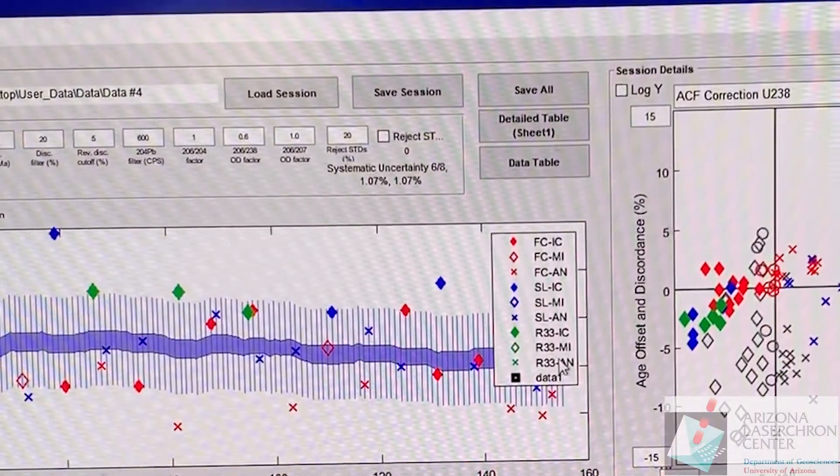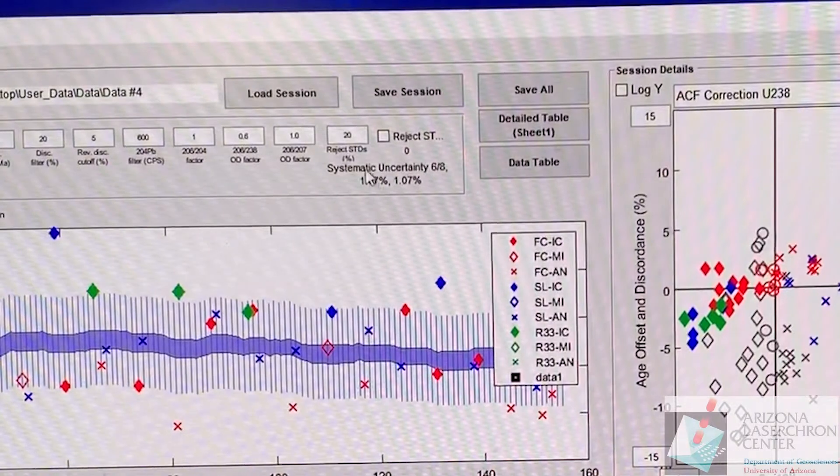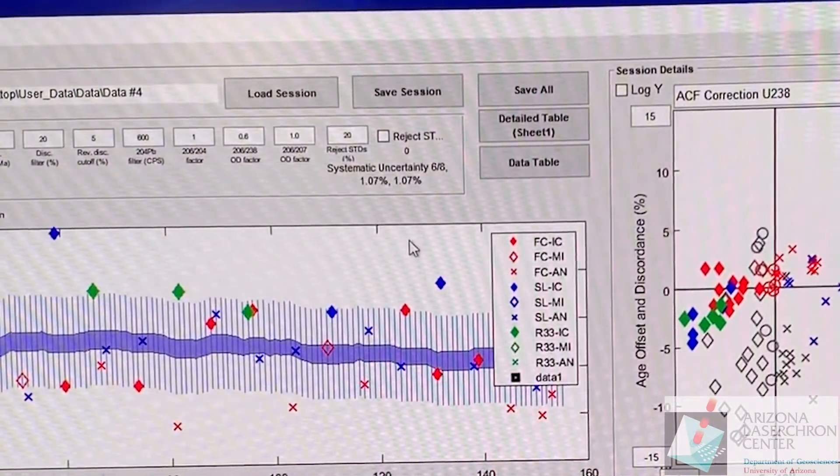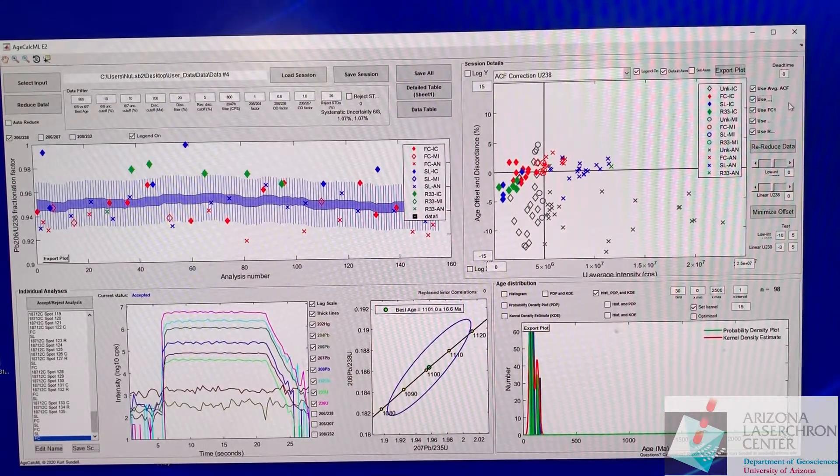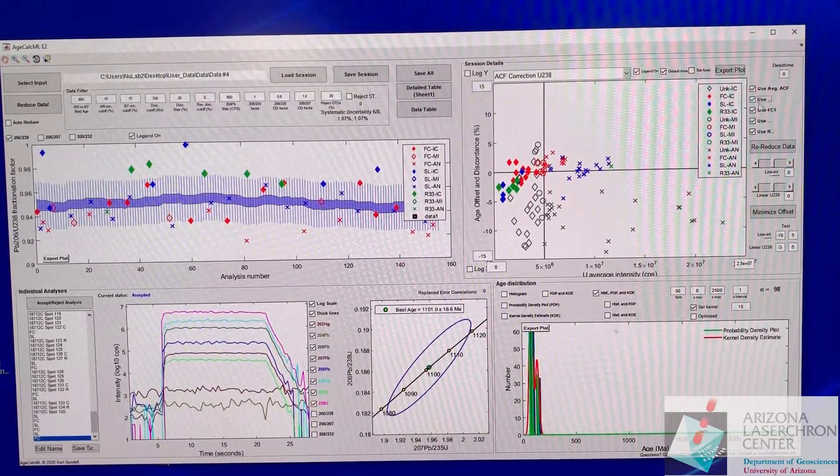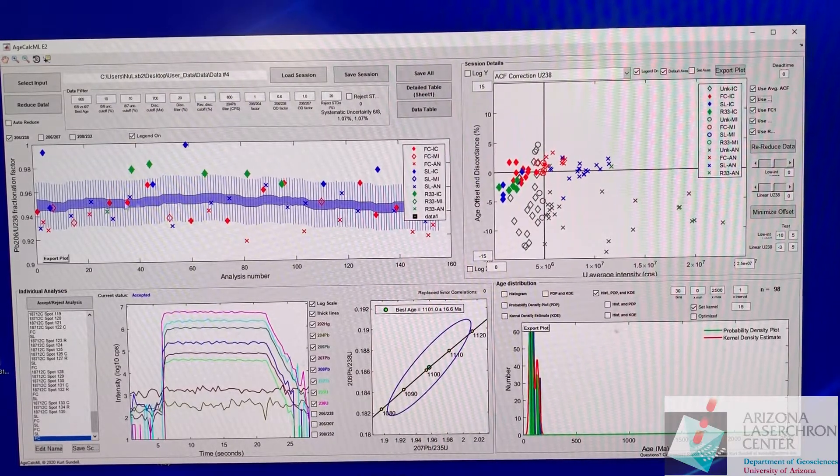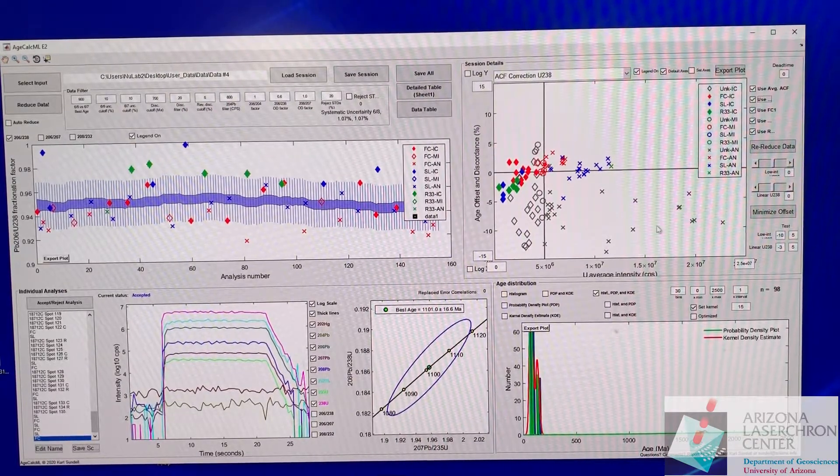You immediately see that this purple swath is much smaller and your systematic uncertainty is down near about one percent. Ideally, you want to use 238. But depending on how the SEM is performing, you might need to use 235. For this session, I'll keep it at 235 because this is looking pretty good.